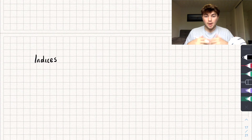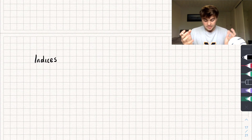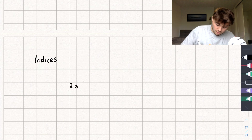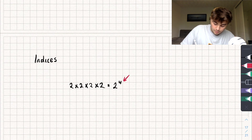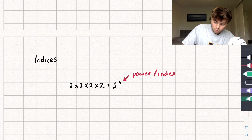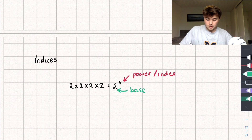Hello, in this video I'm going to teach you everything you need to know about indices for GCSE maths. I'm going to timestamp below the different parts of the video so you can skip through to the part that is most useful to you. The best place to start is: what is an index? Say we had something like 2 times 2 times 2 times 2 — we could write that as 2 to the power of 4. We call this little number the power or the index, and the big number on the bottom the base. The power tells me how many times I'm going to multiply the base by itself.